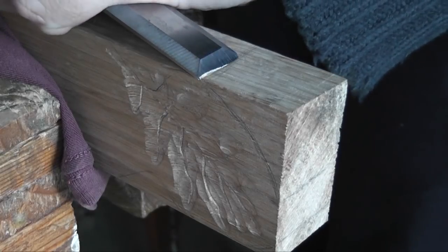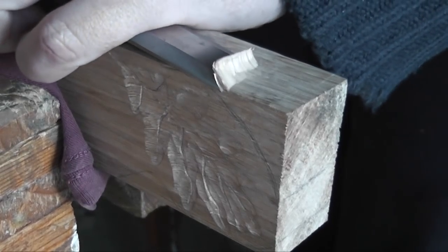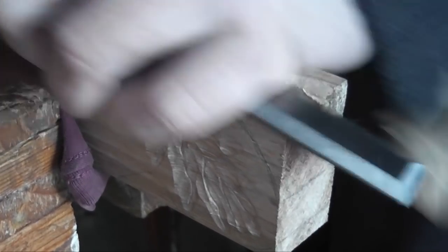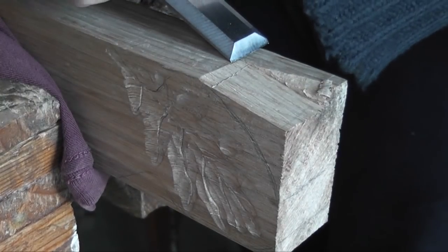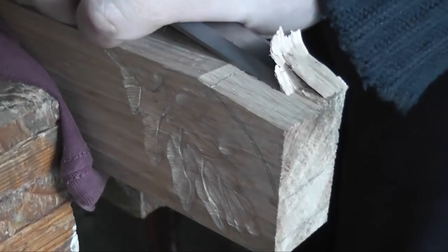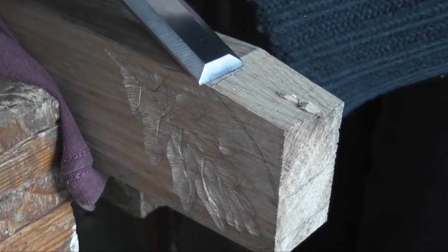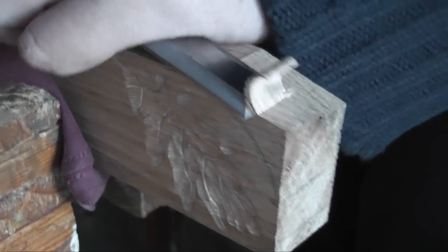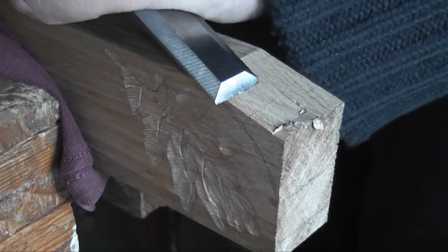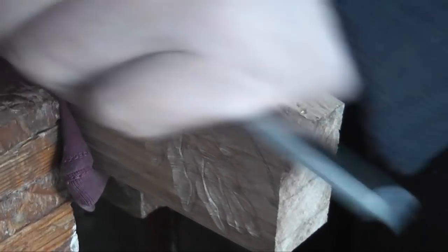This bit you could always do with a coping saw or with a jigsaw if you're a power tool guy or even a band saw. I don't know there's something about doing it with a chisel that's just really enjoyable. Kind of using the weakness of the wood against itself while you're splitting the grain away.